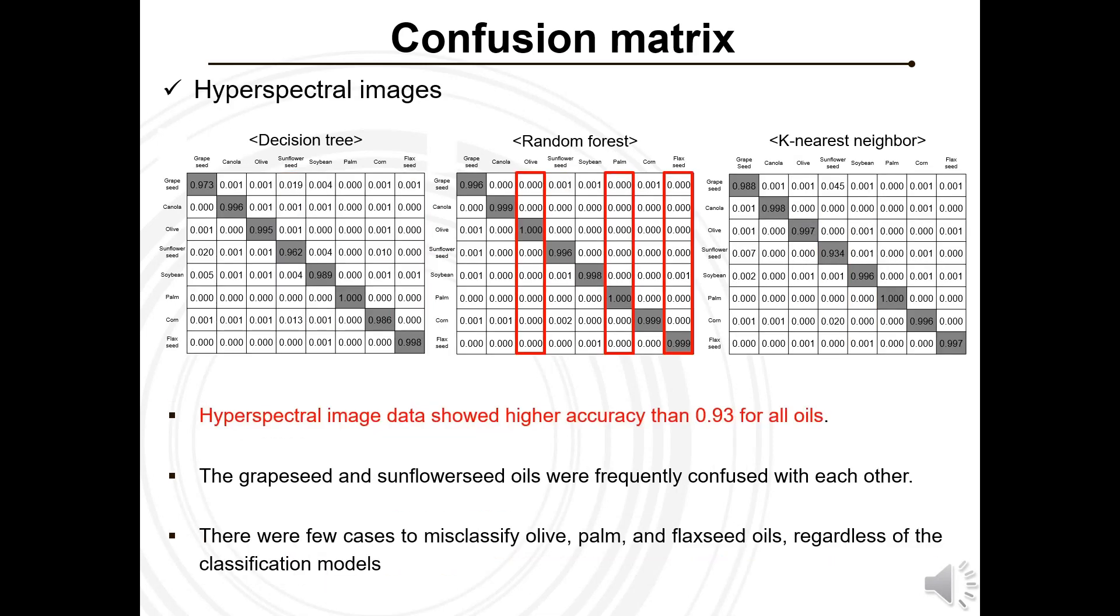When training models with hyperspectral image data, we were able to classify all oils with an accuracy exceeding 93%. Particularly, the models performed exceptionally well in identifying olive, palm, and flaxseed oils.